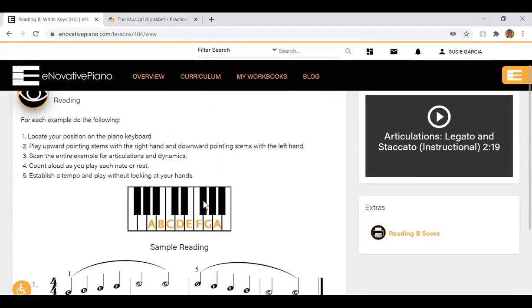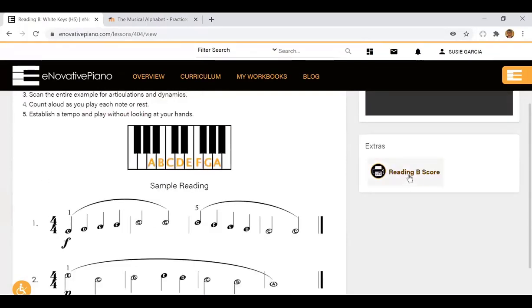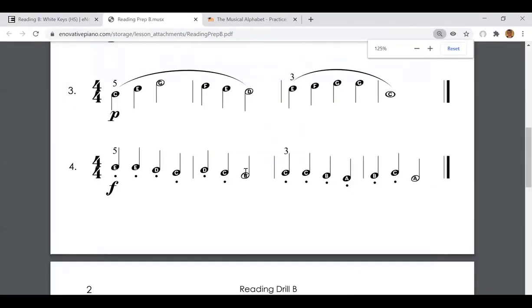So to get to example three, you'll see there's only two samples. You have to go to where it says score, Reading B score. A score is the word that musicians use to refer to sheet music. We say that's the score.